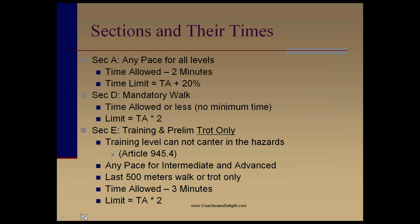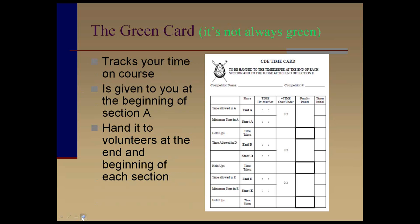Section E timing: the time window is time allowed minus three minutes equals minimum time — a three-minute gap. The time limit is time allowed multiplied by two. Section A is any pace for all levels; the time window is time allowed minus two minutes; the time limit is time allowed plus 20%. Section D is a mandatory walk — there is a time allowed but as long as you maintain a walk, pace doesn't matter much.